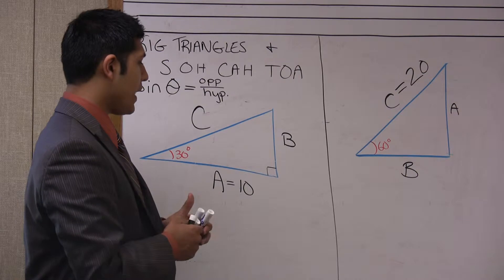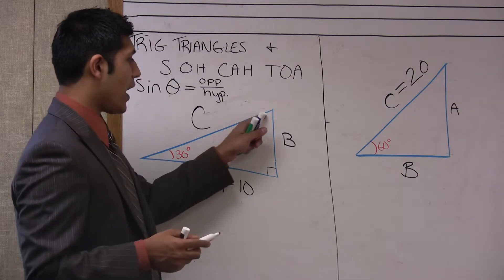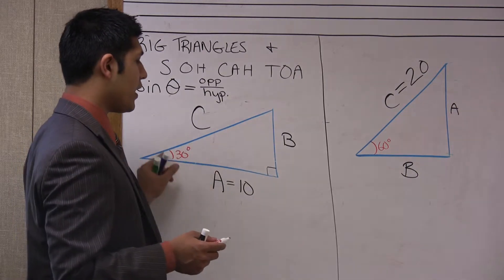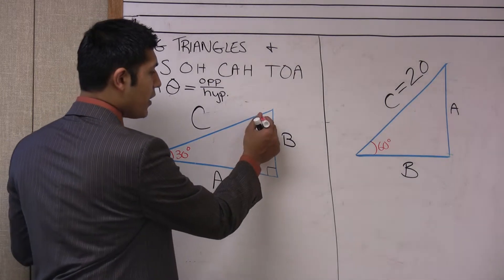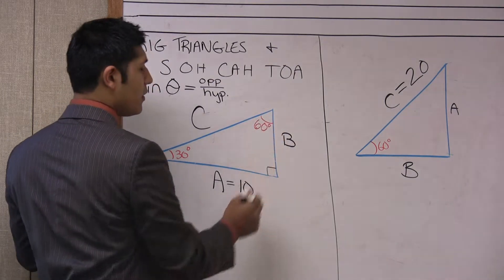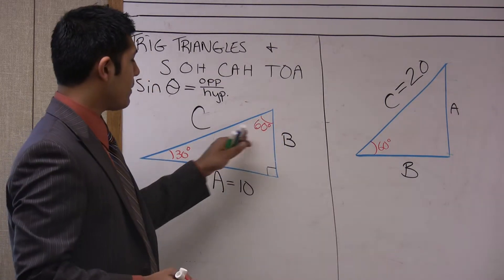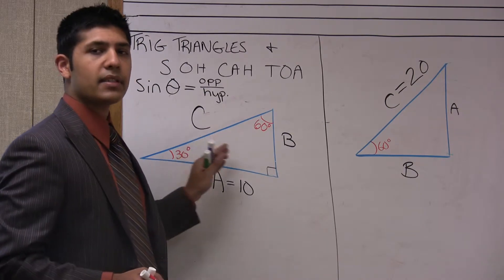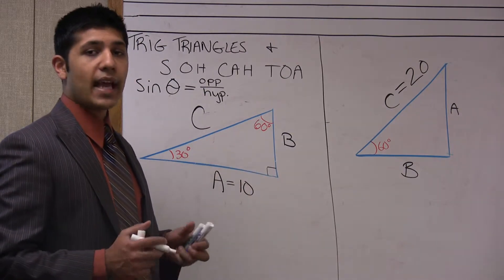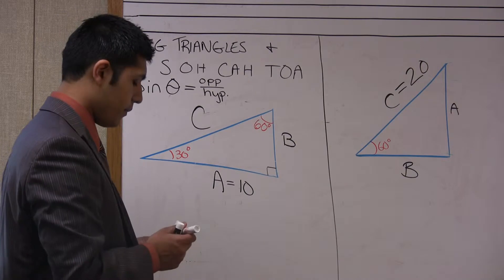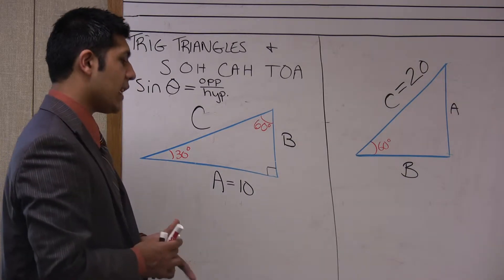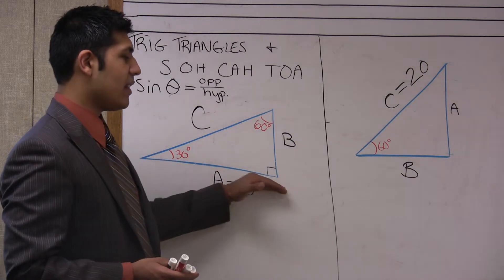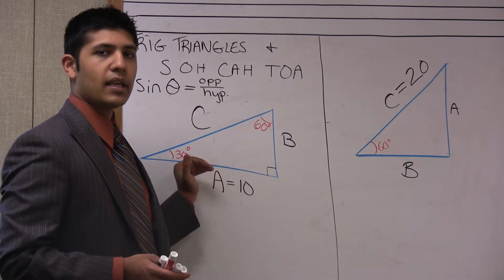If they give us a 30 degree angle here, that means we're going to have a 60 degree angle on the other side. So 60 plus 30 is 90, 90 plus 90 is 180, and that satisfies the requirements for a triangle. The other piece of information they give us is the length of one of the sides.